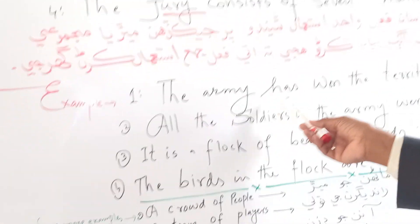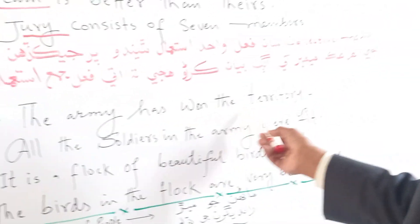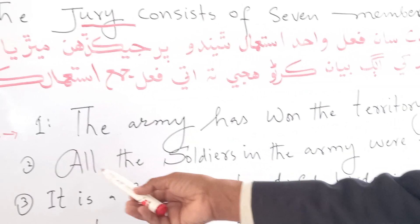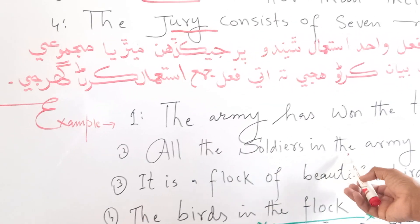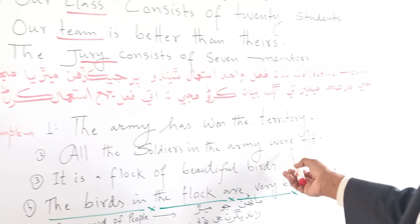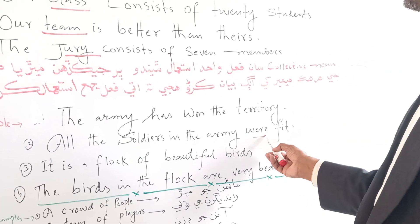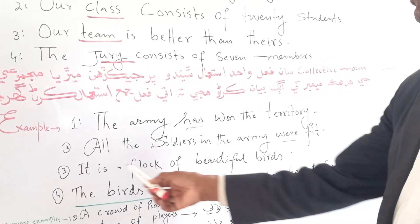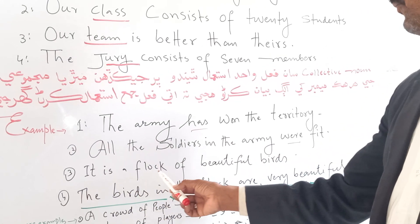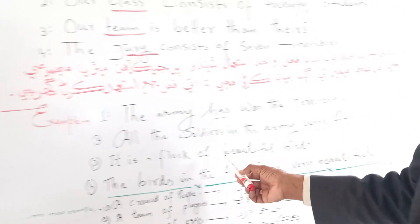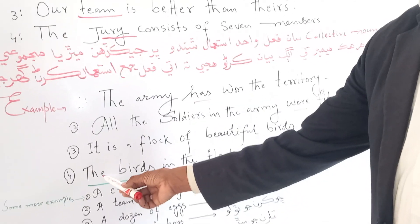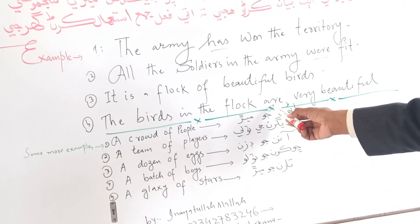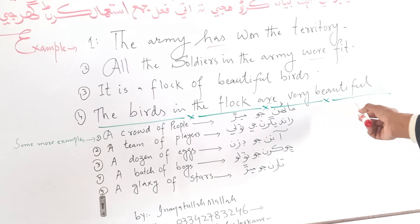For example: 'The army has both the territory' — all soldiers and army were singular. And: 'It is the flock of beautiful birds.' But also: 'The birds in the flock are very beautiful' — here the focus shifts to individual members.